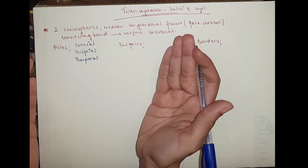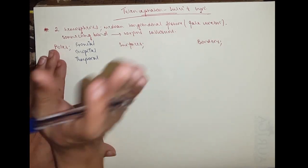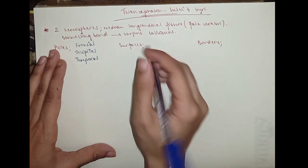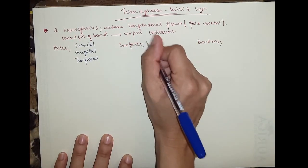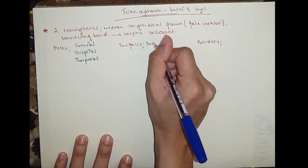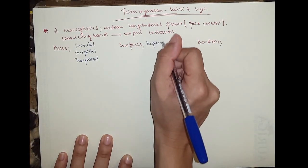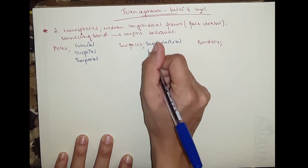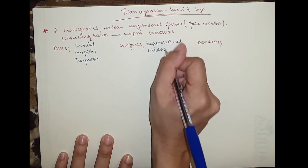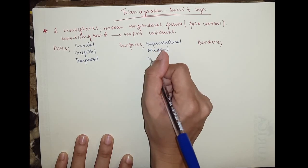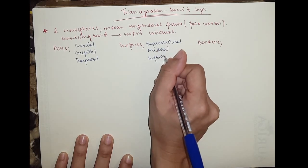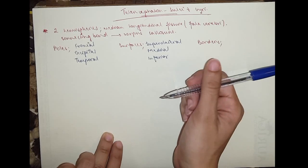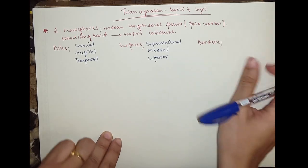Temporal is of the sides, occipital would be the back side, and frontal would be the front side of the brain. Then we have surfaces: we've got the superolateral, the medial, and the inferior. The inferior is divided into two, which would be the orbital and the tentorial.